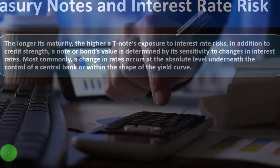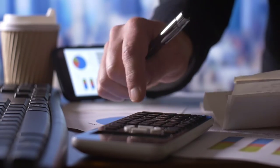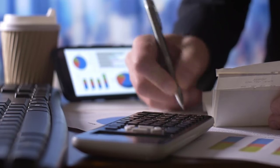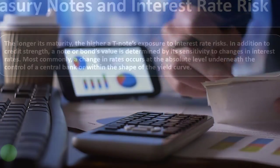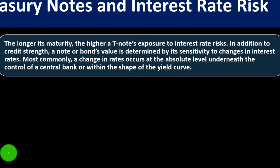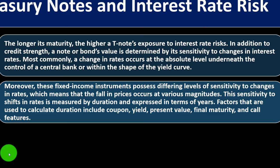In addition to credit strength, a note or bond's value is determined by its sensitivity to changes in interest rates. Most commonly, a change in rates occurs at the absolute level under the control of a central bank or within the shape of the yield curve. These fixed income instruments possess differing levels of sensitivity to rate changes, meaning the fall in prices occurs at various magnitudes. This sensitivity is measured by duration, expressed in terms of years.